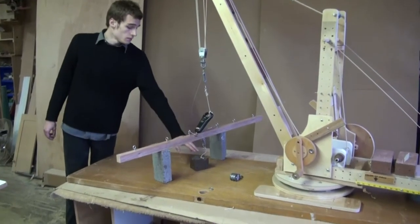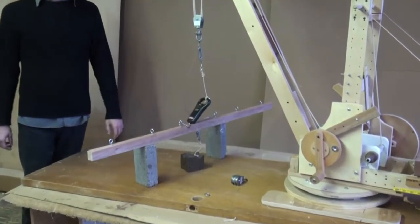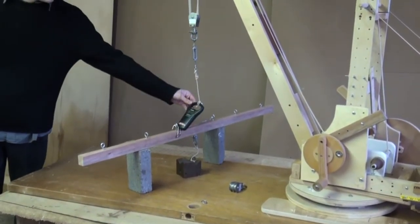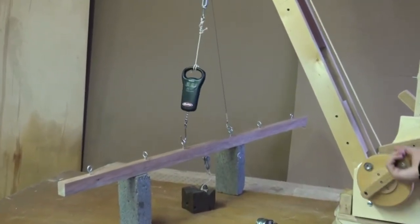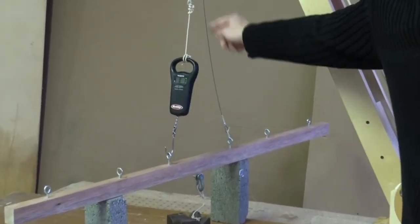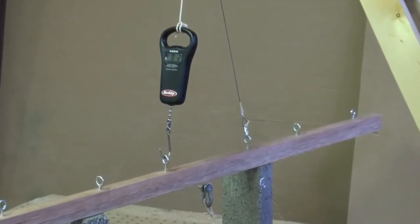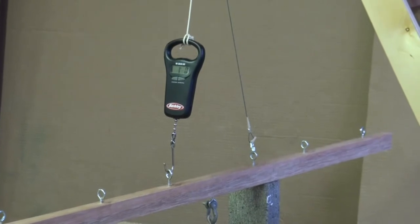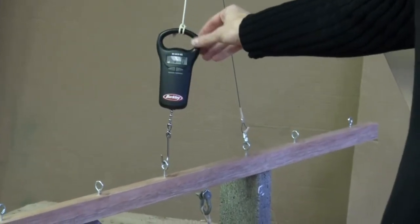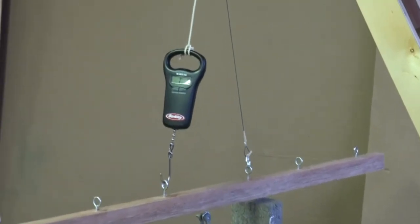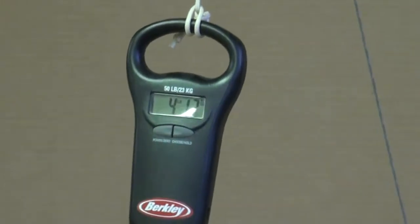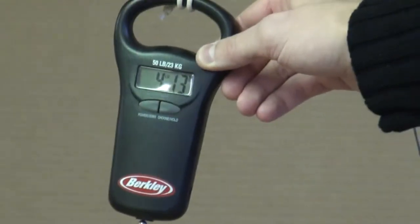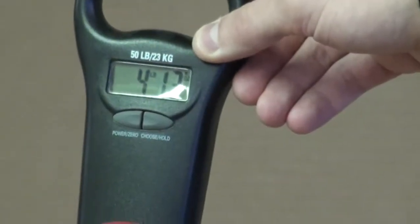The bar right here and the weight right here weigh about 8 and three quarters pounds. Now, these two legs here hold the load up. Each leg is at a 77 degree angle. Each leg holds about half the weight. As you can see, it's about 4 or 5 pounds on each leg.